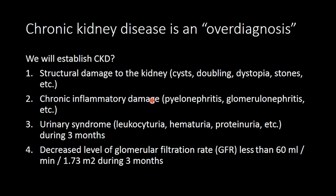Chronic kidney disease is an overdiagnosis, meaning we place it over our main diagnosis. This is not a surprise for you. We can find the same condition in respiratory system diseases — like pneumonia or bronchitis — where we establish respiratory failure at the end of the diagnosis. At the end of a cardiovascular diagnosis, we establish heart failure according to NYHA classification by functional classes. And after kidney disease, we establish CKD.